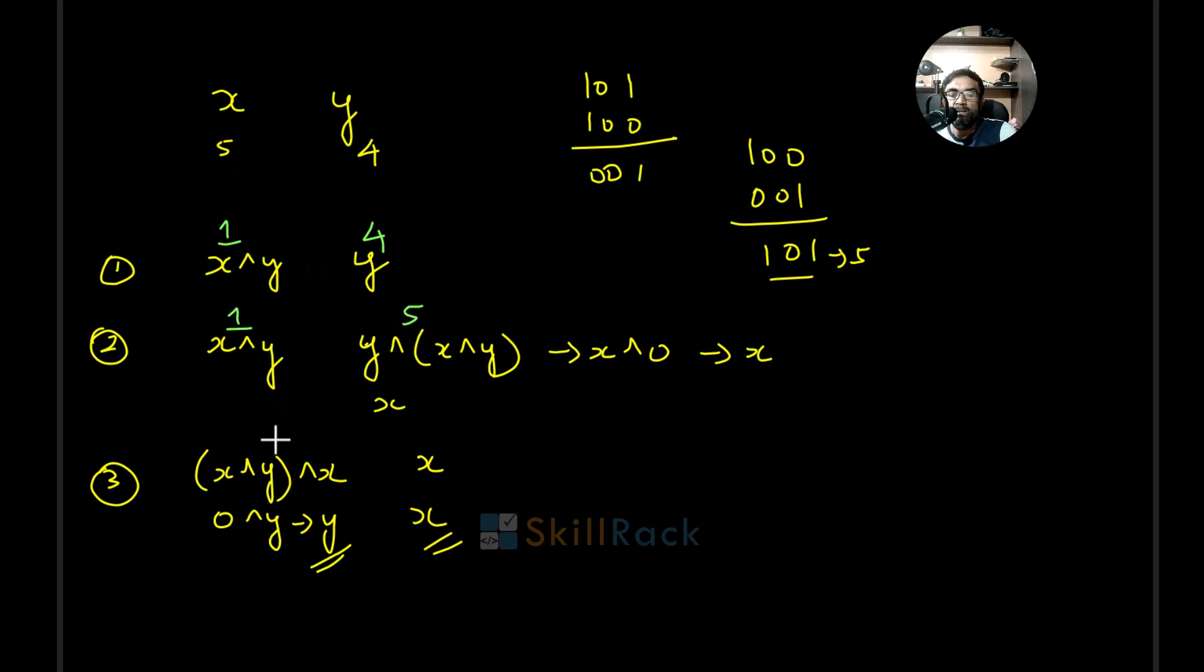In step 3 you are going to XOR the value contained in X with the Y value. The value in X is 1, right? 1 is 0 0 1. What is the value contained in Y? It is 5, which is 1 0 1. When you XOR, it is 1 0 0 which is nothing but 4.